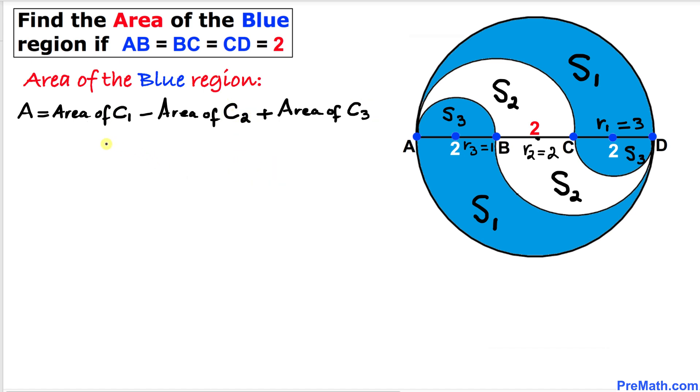Now we'll calculate the area of these individual circles C1, C2, and C3. Here's our area of circle formula.